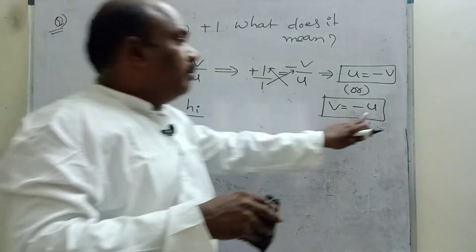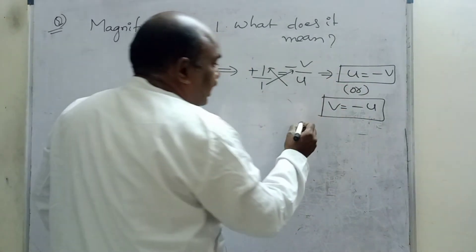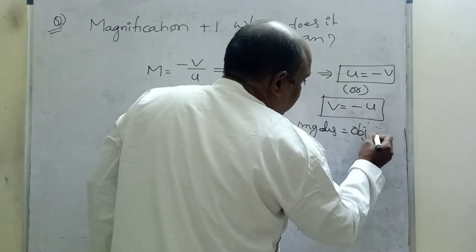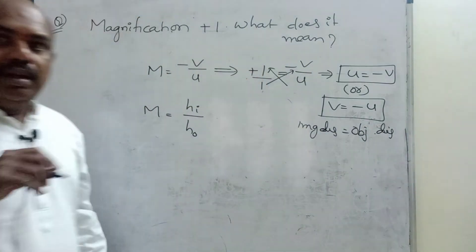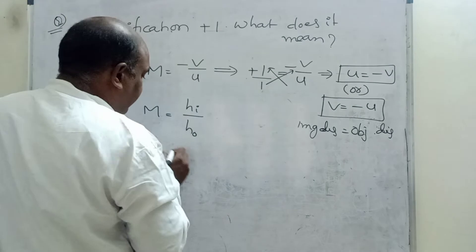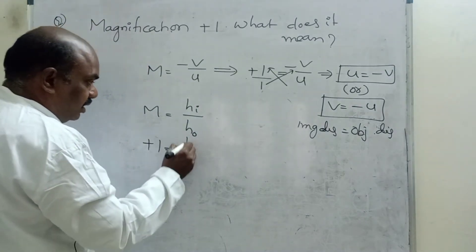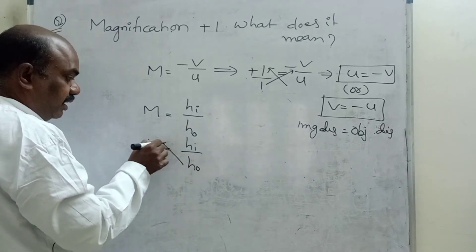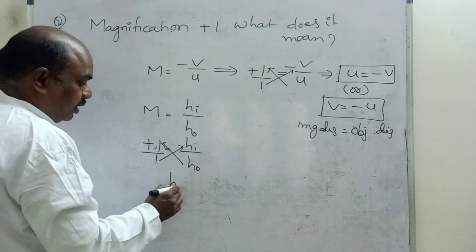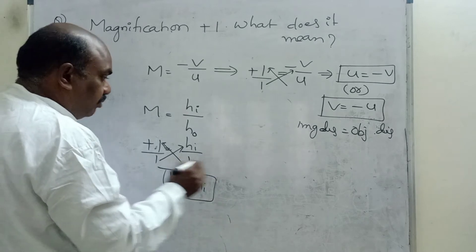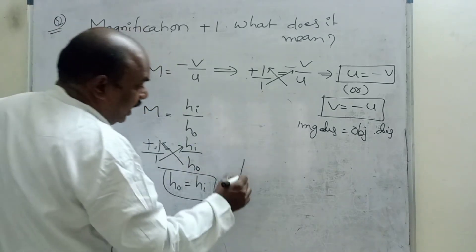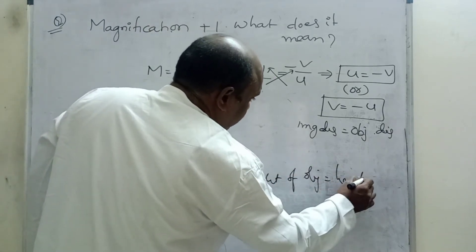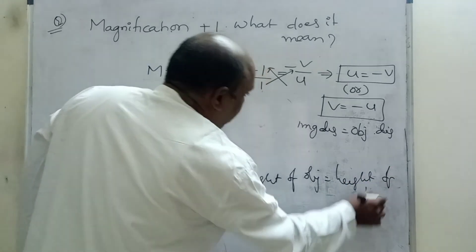So the first condition we got is: image distance is equal to object distance (with sign: V = minus U). Now checking the second formula: plus 1 equals HI by H0. Cross multiplying gives H0 is equal to HI — height of object equals height of image. Image height and object height are both the same. These are the two conditions: image distance equals minus object distance, and HI equals H0.